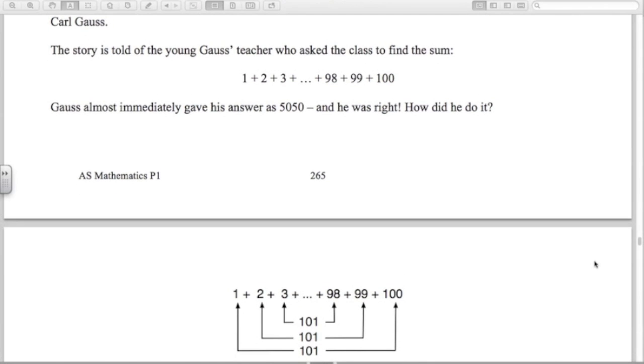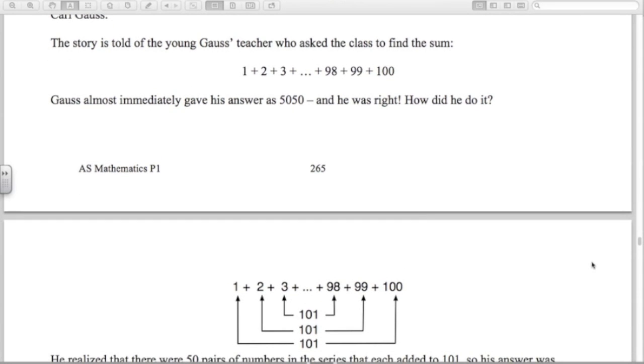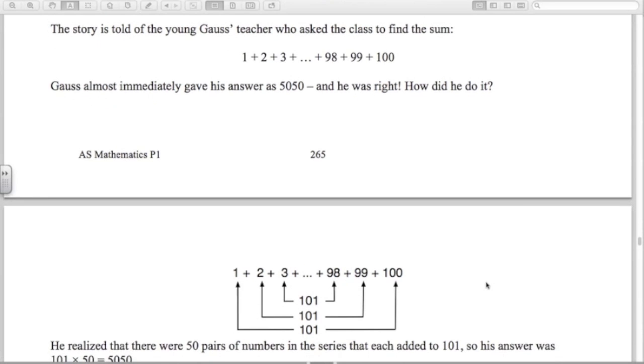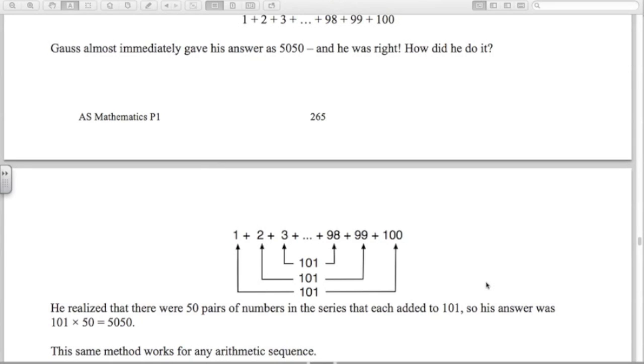What he realized is that adding the first and last numbers gives you 101, and the second and the second last number gives you 101, and so on. So he realized that he had 50 lots of 101s, giving him 5050. Pretty clever.